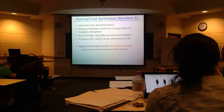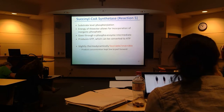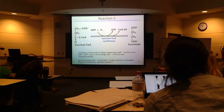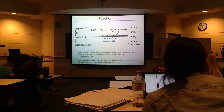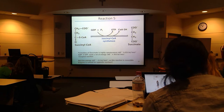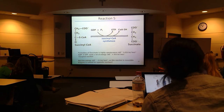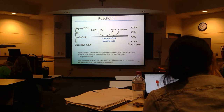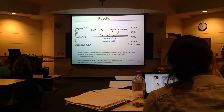This is still a relatively spontaneous reaction and does proceed forward to products. Typically when the cycle is running, the product succinate is quickly consumed by the next very spontaneous reaction, so succinate concentrations are very low, which typically pushes this strongly toward making more succinate.